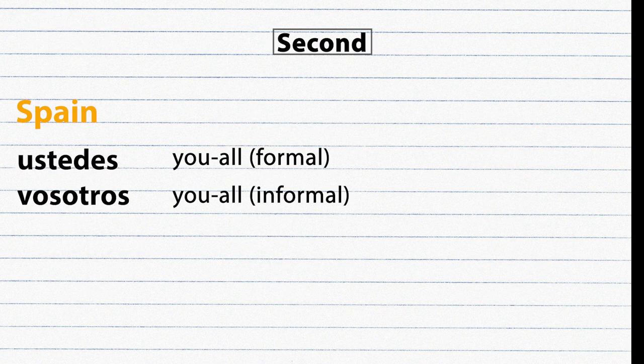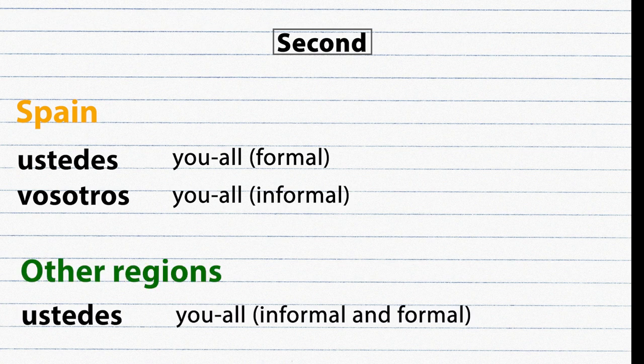The second key difference is in the pronouns. In Spain, the second person plural pronoun 'vosotros' is used in informal situations while 'ustedes' is used in formal situations. In other regions, 'ustedes' is used regardless of formality. For simplicity, this video will focus on Latin American Spanish.